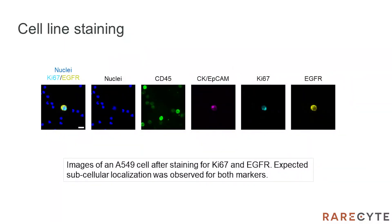Expanding this work to two markers of interest, here we have staining of A549 cells for both Ki67 and EGFR. The merged image on the left shows the expected nuclear localization for Ki67 and membranous staining for EGFR.